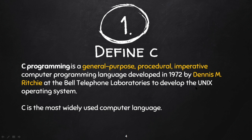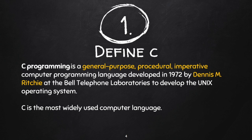The Unix operating system was developed in C. Some examples of Unix-based operating systems include Linux, Kali Linux, Solaris, and Unix. C is the most widely used computer language and is very popular.